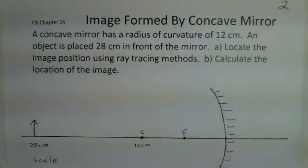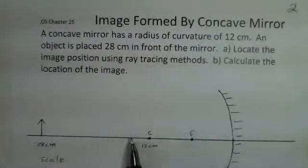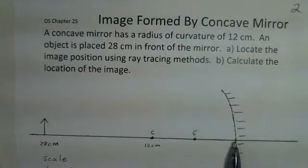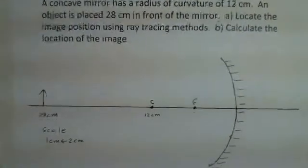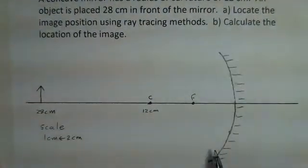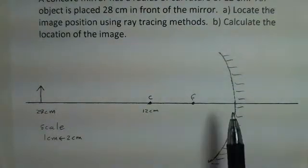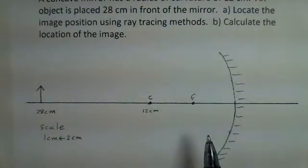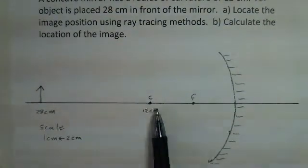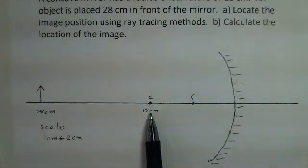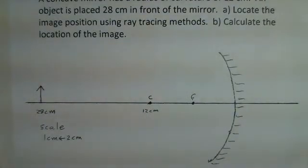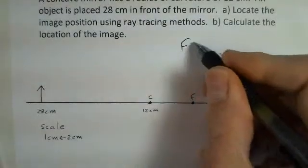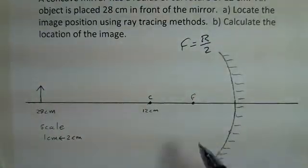So we have a principal axis for this mirror coming along here. It's the center of the mirror. We're taking this mirror to be spherical shape, but we are going to ignore spherical aberration. The mirror has a radius of curvature of 12 centimeters. The focal length is half of the radius, so we have a focal length of 6 centimeters.